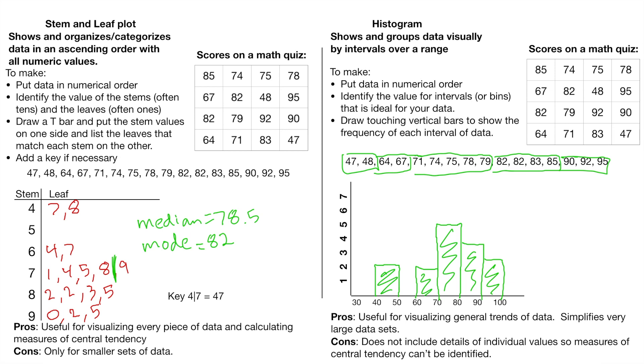However, if we were, let's say, looking over here at a histogram, we can't calculate that median in the mode because we can no longer see the individual values. So right here, as I said, our cons, it doesn't include the individual values. So measures of central tendency can't be identified. Also, con of a stem and leaf plot, if you have a lot of numbers, it can get kind of hard to look at and organize.